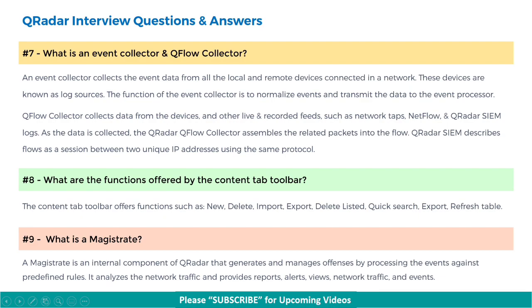Next, what is an event collector and a flow collector? An event collector collects event data from all local and remote devices connected in a network — these devices are known as log sources. The event collector normalizes events and transmits the data to the event processor. The QFlow collector collects data from devices, assembles related packets into flows, and QRadar SIEM describes flows as a session between two unique IP addresses using the same protocol.